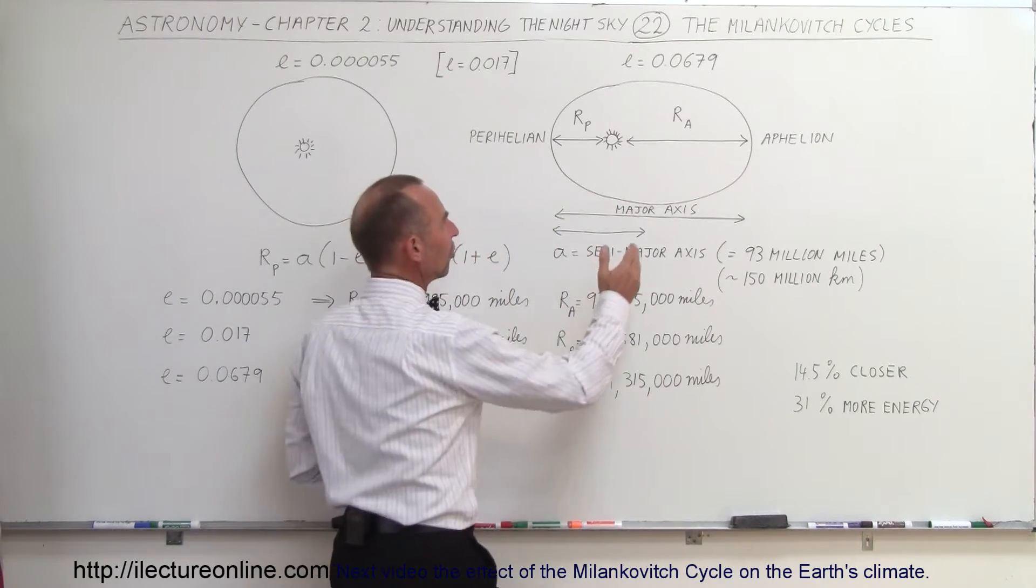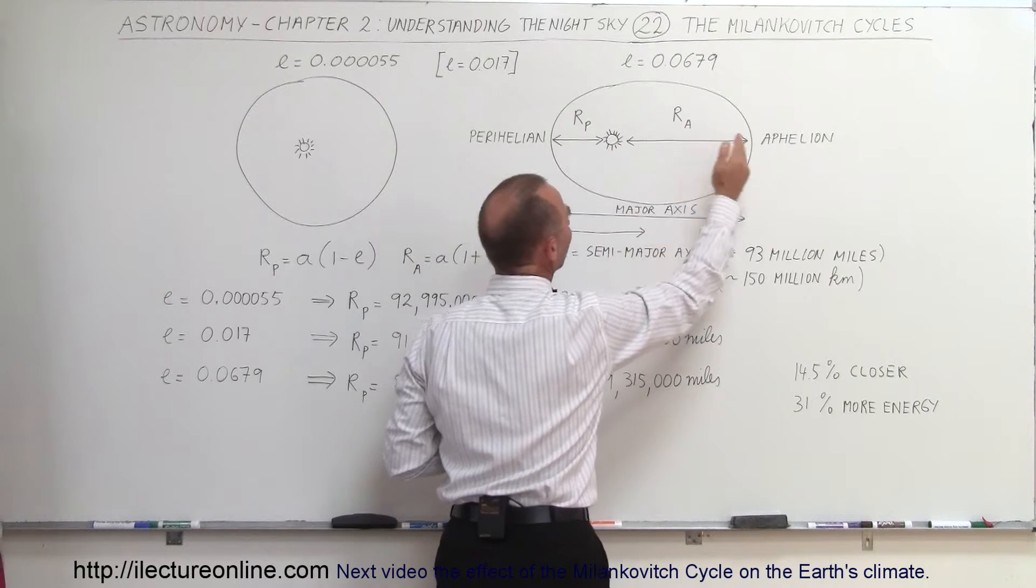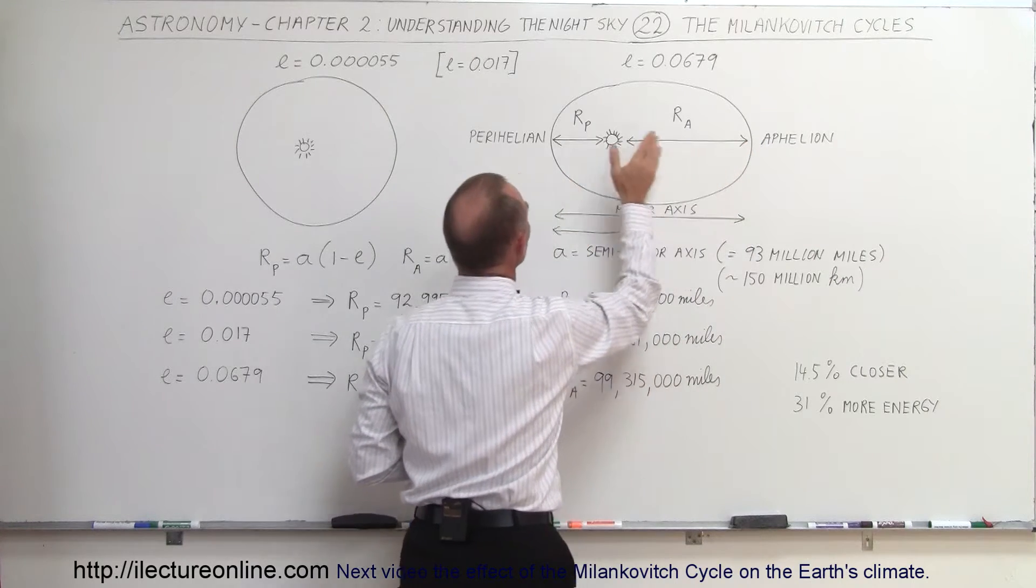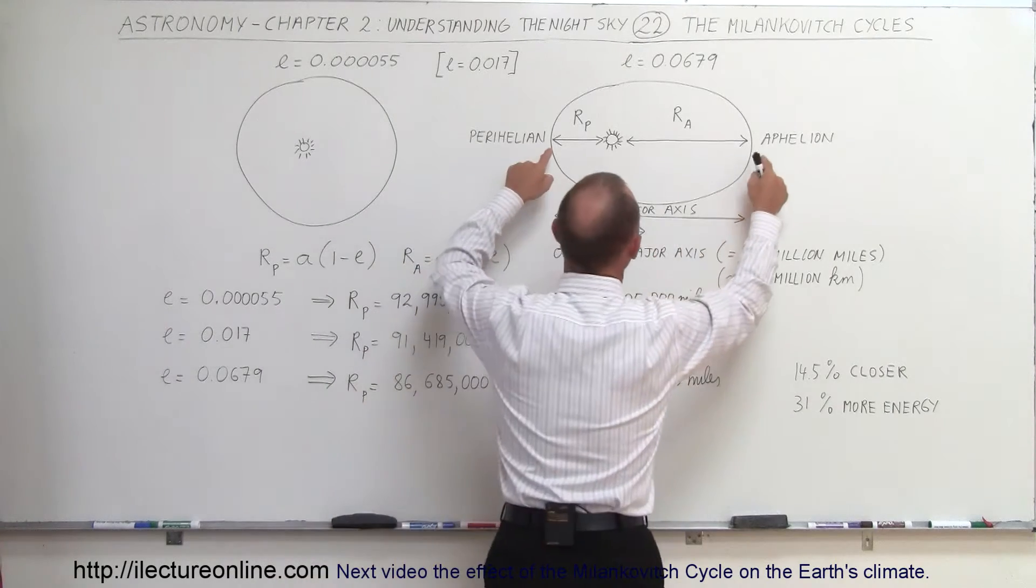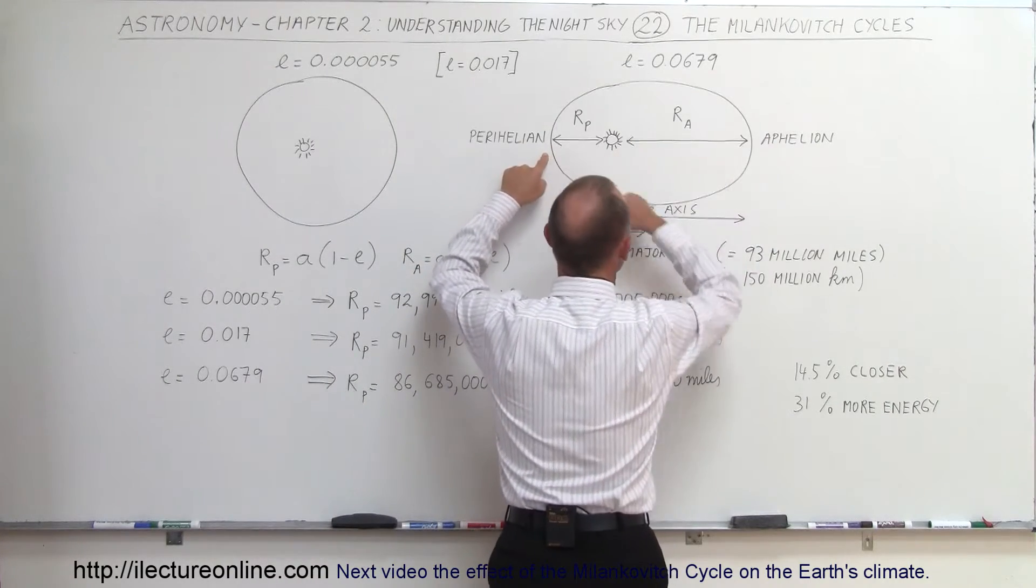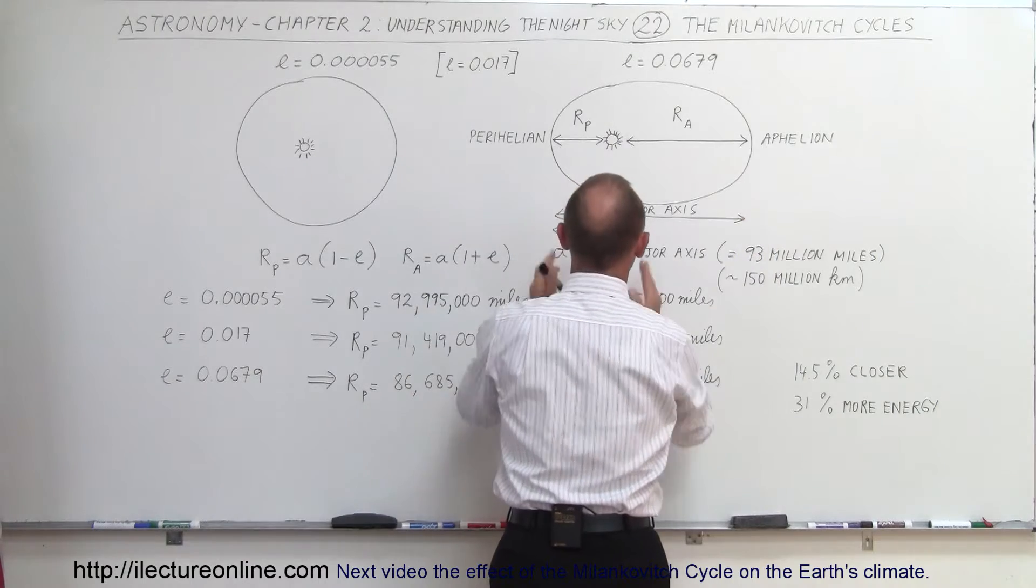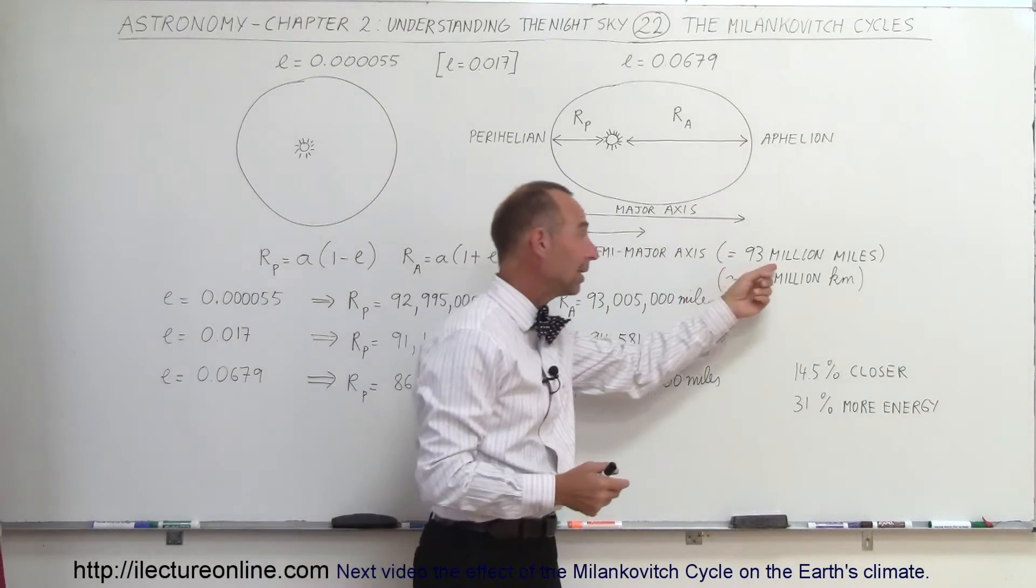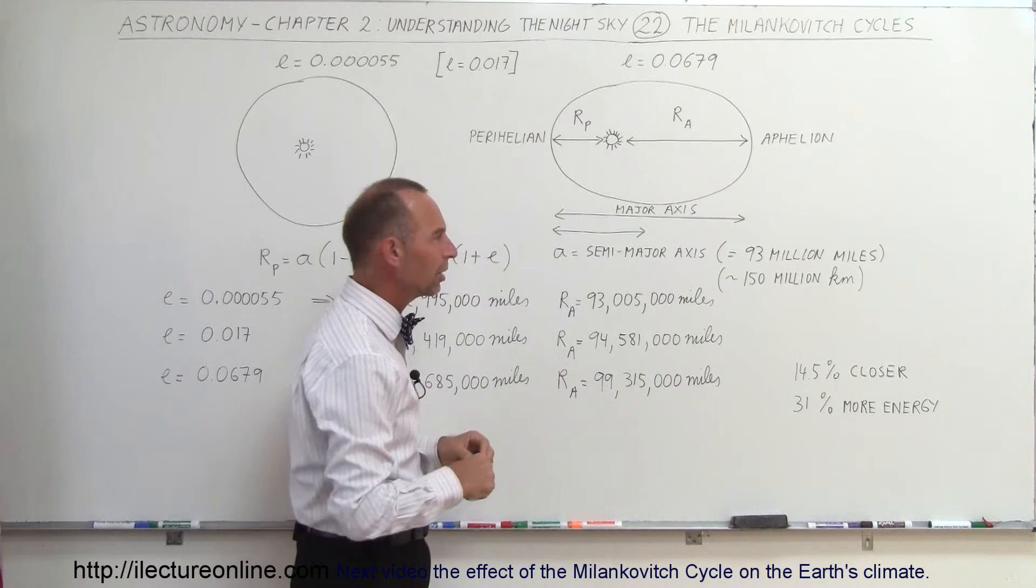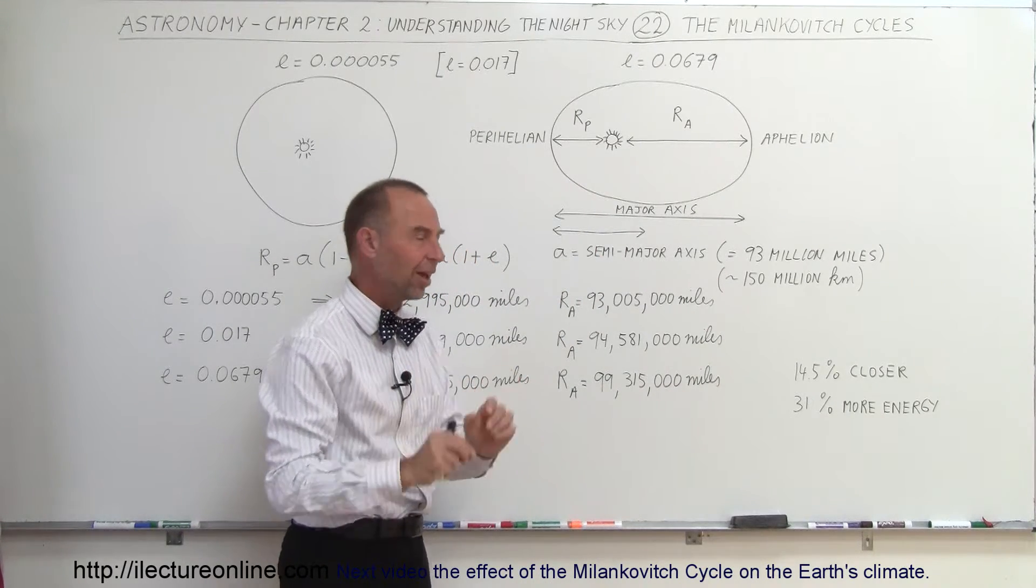In other words, the distance from the Earth to the Sun at aphelion will be much larger than the distance from the Earth to the Sun at perihelion. Remember that the total distance from the opposite ends of the orbit in the ellipse is called the major axis, and half of that is called the semi-major axis. On average, that distance is 93 million miles, about 150 million kilometers, and those are approximate numbers.